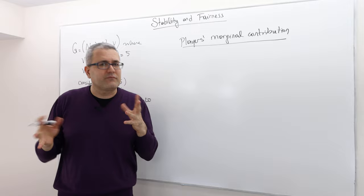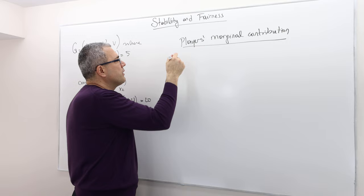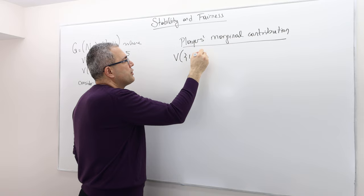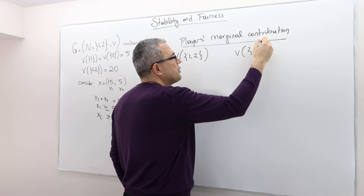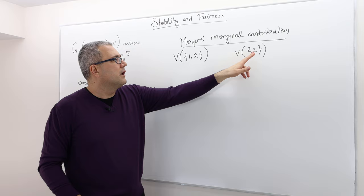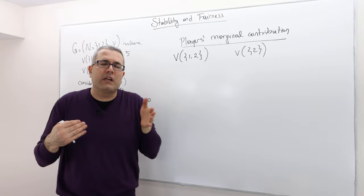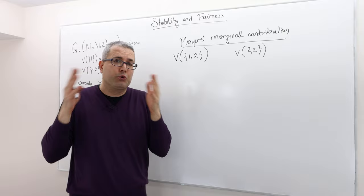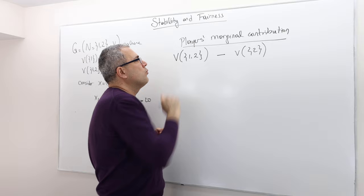Well, for example, how do I calculate something like this? Well, here's how I would calculate. So let's consider the worth of coalition 1, 2. And then, worth of coalition 2. What is the difference between these two coalitions? Well, this coalition, I just add player 1. All right, so once player 1 enters to the group of player 2, or player 2's coalition, I know this is bigger or equal to, right? Thanks to super-additivity.